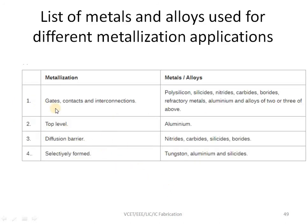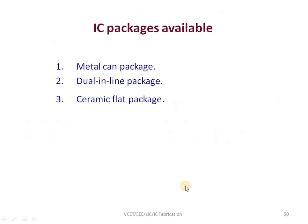A tabulation explains the different materials used for metallization and the different metal contacts used in an IC, including gate contacts and interconnection, top-level connections, diffusion barrier, and selectively formed interconnections, listing the various metals that can be used for growing the metal layer.